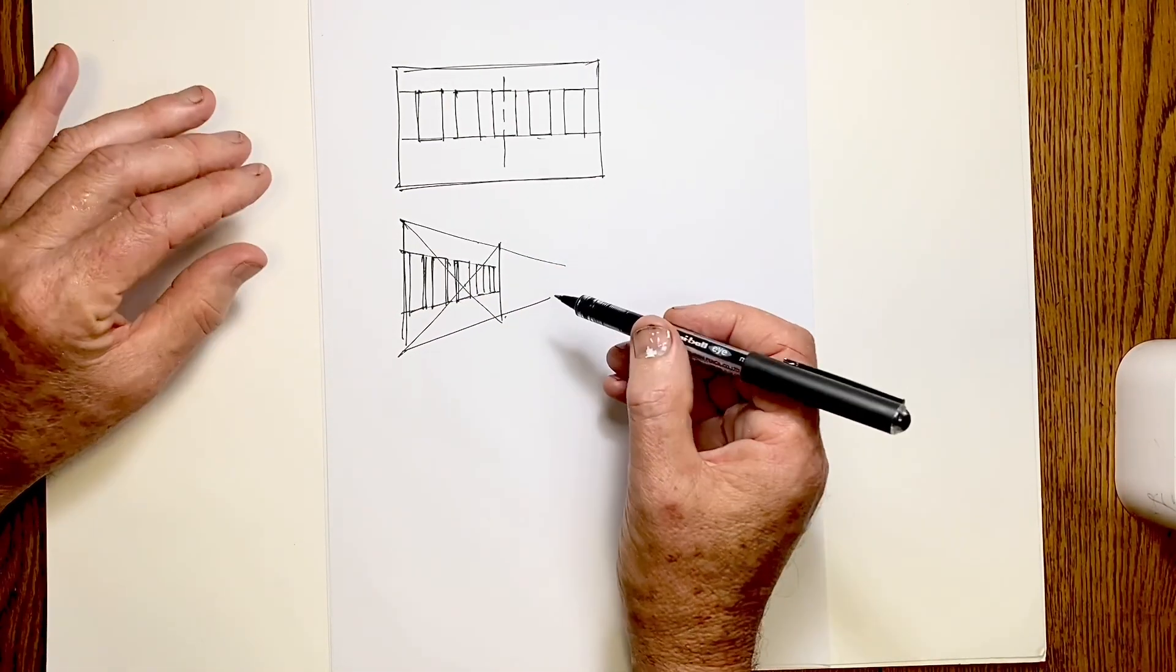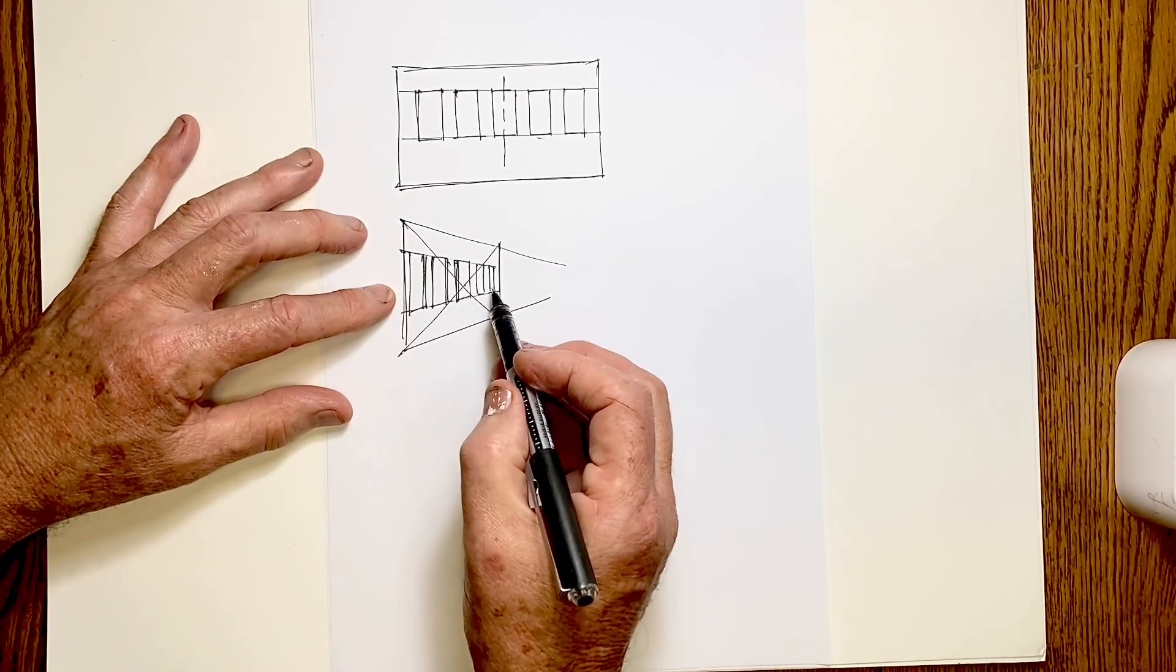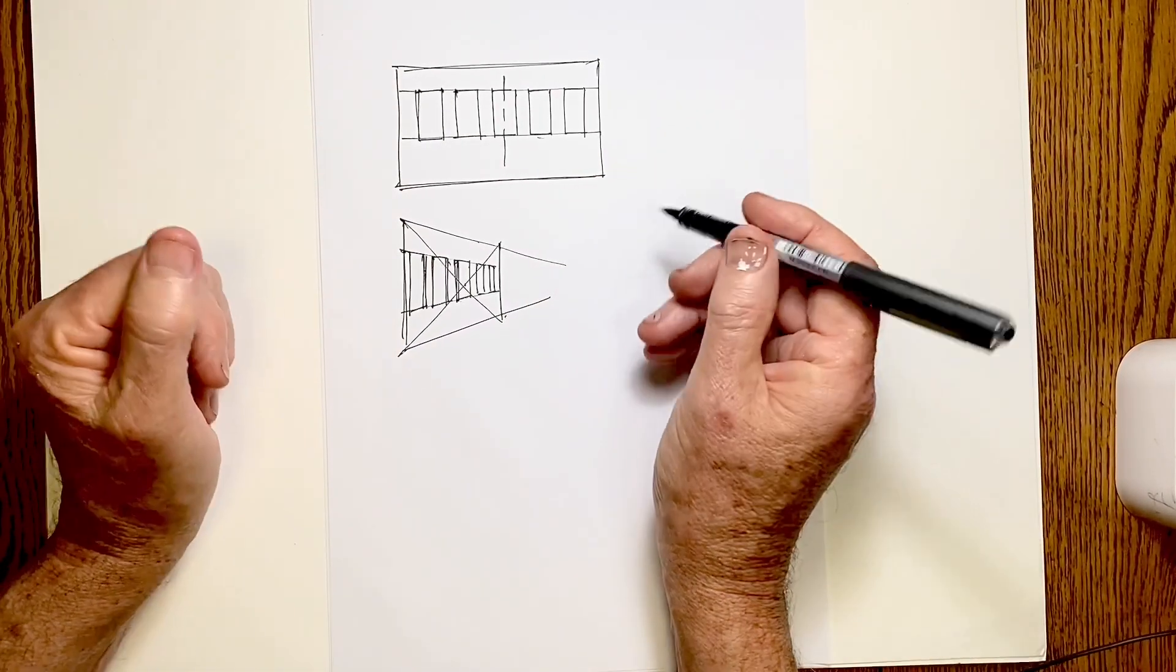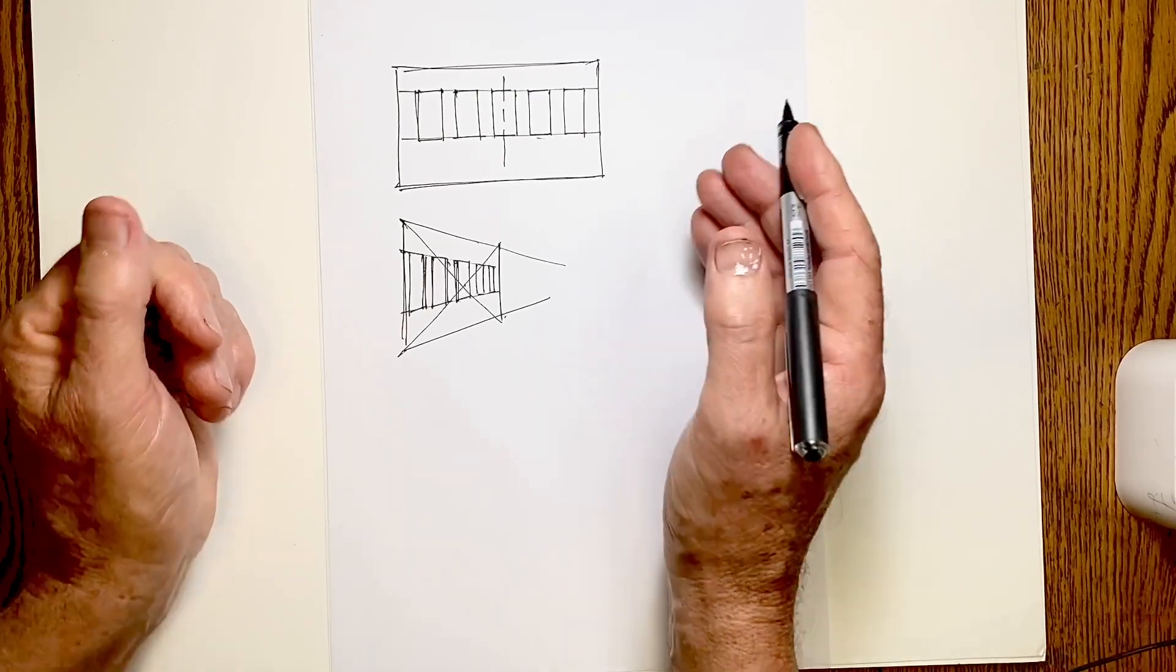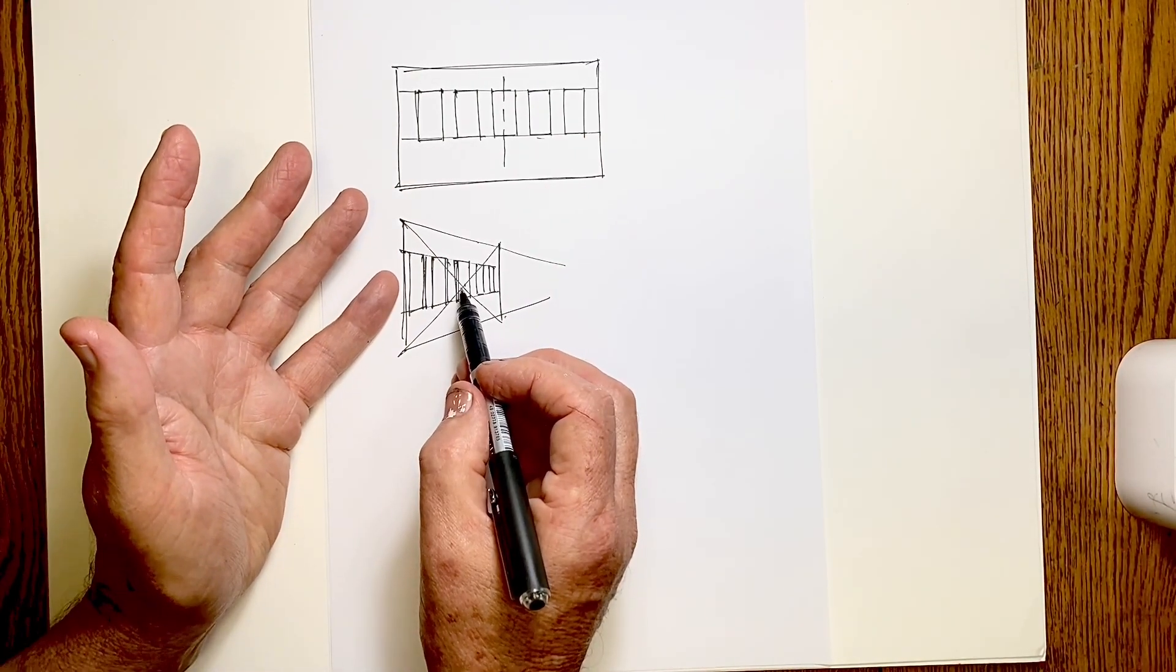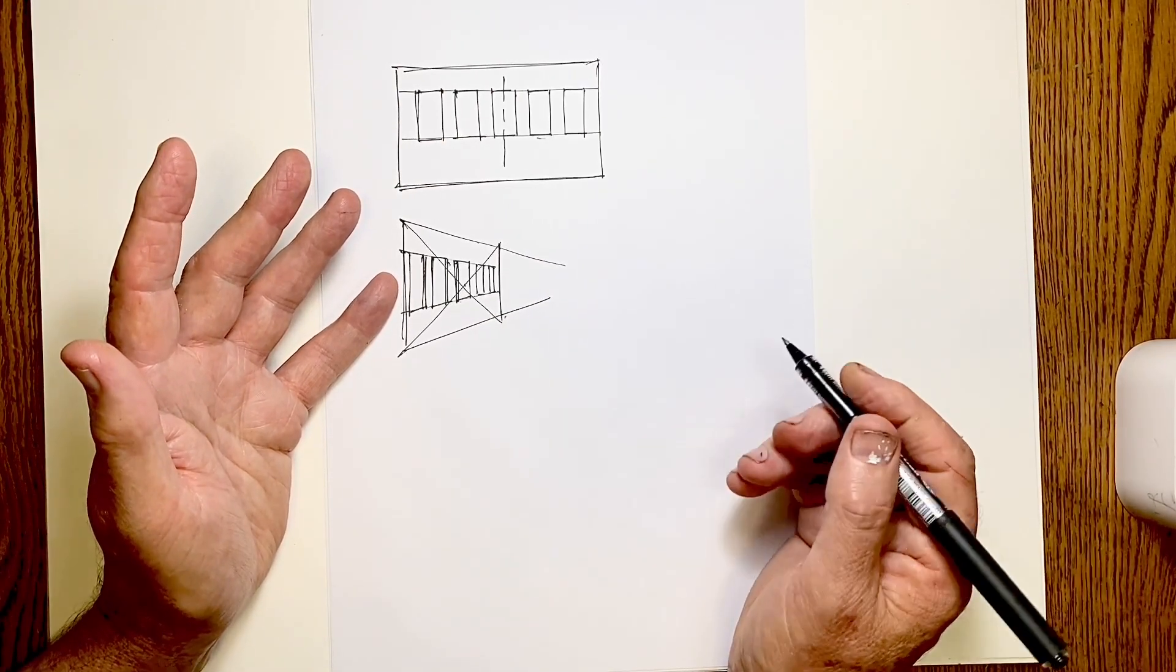Now what we can see is that the further away the wall becomes, the narrower the windows become and the narrower the gaps between the windows. In fact, the narrower the wall is. The width of the first half of the wall is a lot more than the width of the second half of the wall.